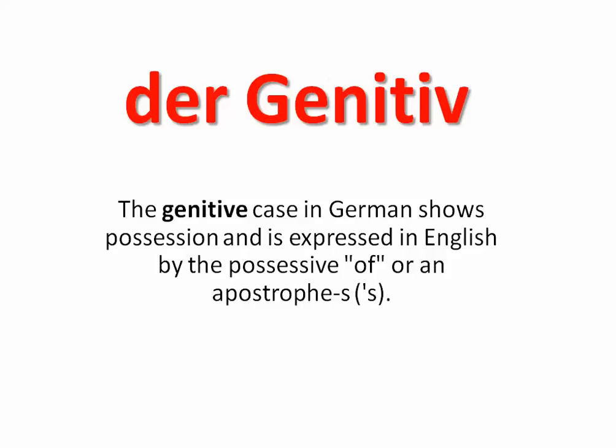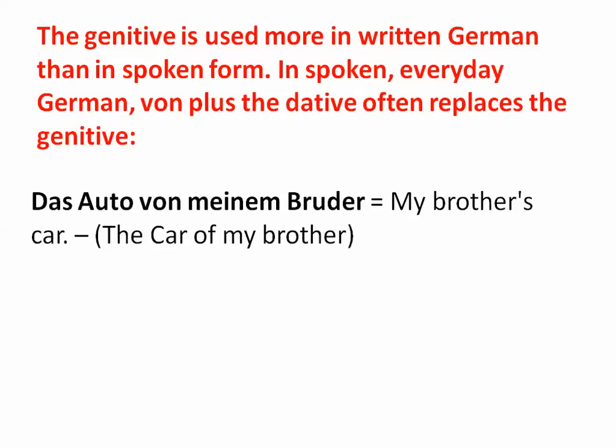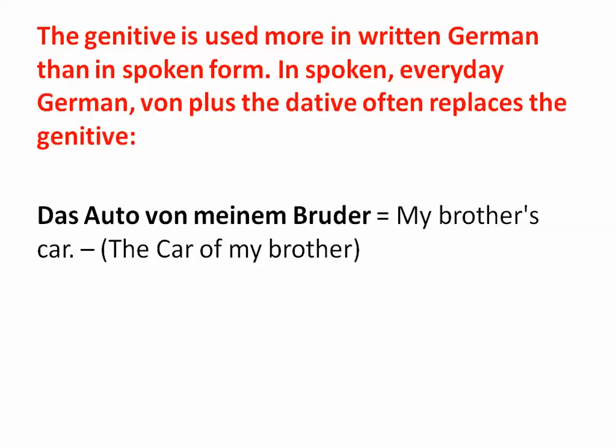The genitive case in German is used to show possession. In English we do this by the use of 'of' or by an apostrophe. The genitive is used more in written German than in spoken form. However, you will hear it also in spoken form. A lot of times 'von' plus the dative is also used to replace the genitive. For example, 'das Auto von meinem Bruder.' In English we no longer use this form — we just use the apostrophe S.